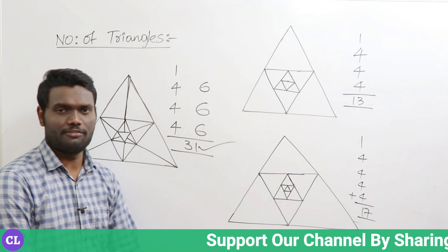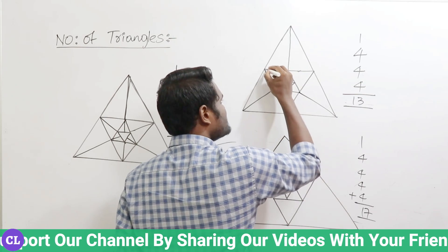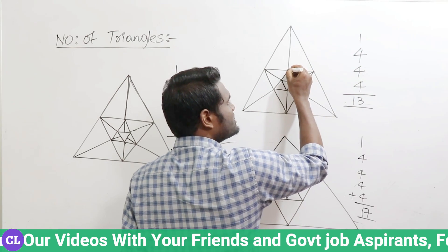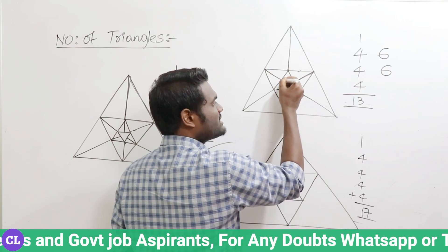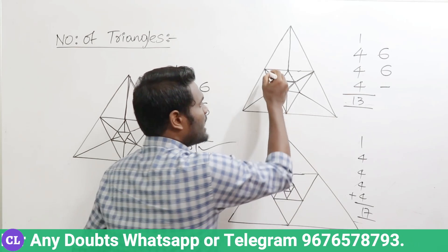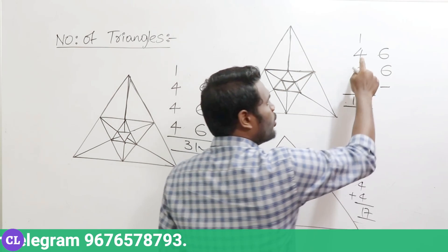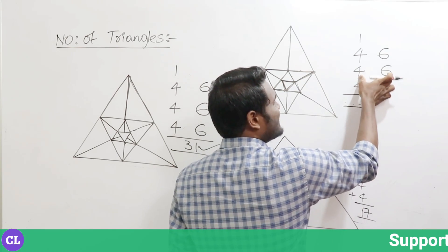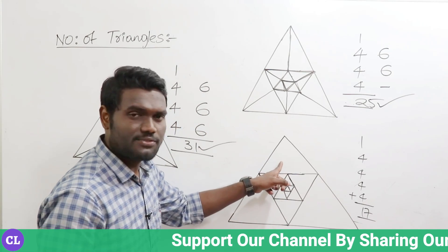Now let us say extensions are only on some triangles — extension here and extension here but not on this third triangle. For the two triangles with extensions, you add six each, but for the triangle without an extension you do not add six. Only for triangles wherever you have extension do you write six. So total: ten plus ten equals twenty, plus four plus four plus one equals nine — wait, that gives twenty plus five, so twenty-five triangles in this figure.